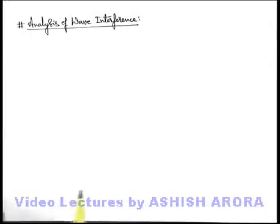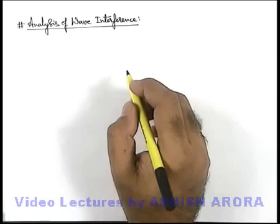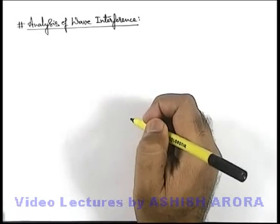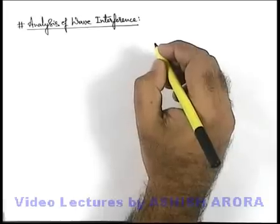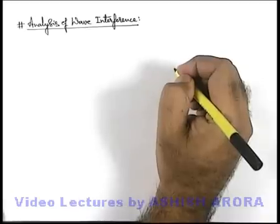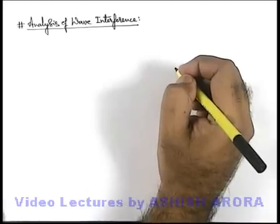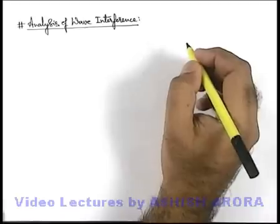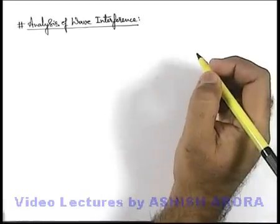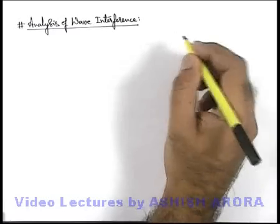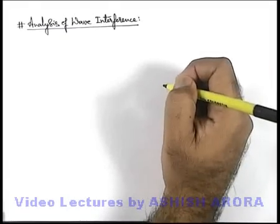Let us analyze the phenomenon of wave interference mathematically. In this section we'll study how the resulting amplitude of two waves after interference changes, and we are also going to discuss the factors on which the interference at a position depends.